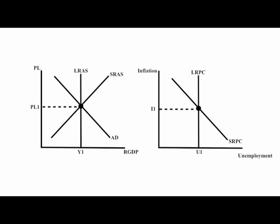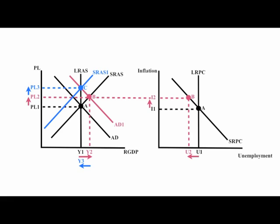In the long run, we're going to start at point A, representing our equilibrium point. When we increase aggregate demand going through expansionary cycles, price levels and GDP will increase to point B. Inflation will also increase and unemployment will decrease. In the long run, the short-run aggregate supply curve will shift to the left, further bringing prices up to point C, and our output will return back to the long-run equilibrium, which will shift the short-run Phillips curve to the right, increasing inflation to point Inflation 3, and bringing unemployment back to our original starting point.